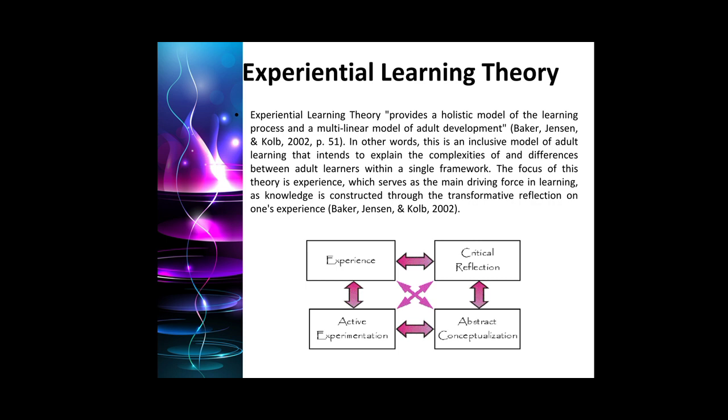If a learner is more comfortable perceiving new information concretely and actively experimenting, they must also undergo some abstract conceptualization and reflective observation to complete the cycle and achieve effective learning. A learner who experiments with models must also be able to conceptualize and form observations based on what they experience, even if they don't consider themselves strong in these areas. This is at the heart of the ELT model and Kolb's view of the adult learner. This experiential learning theory is adaptable to extension educators, as we can learn better about a community by going to that community and experiencing firsthand what the needs are.